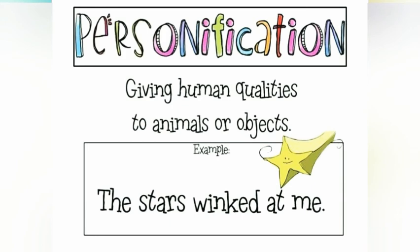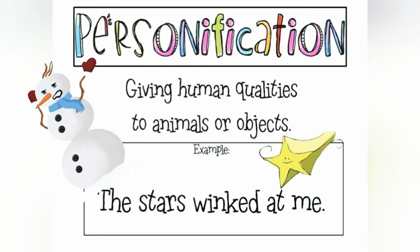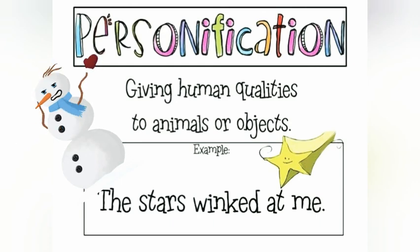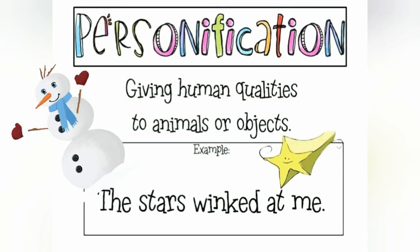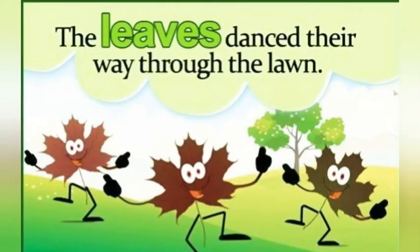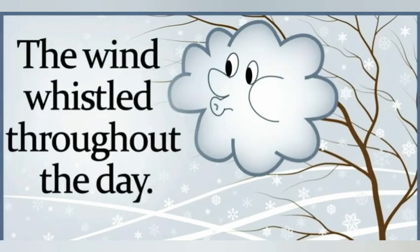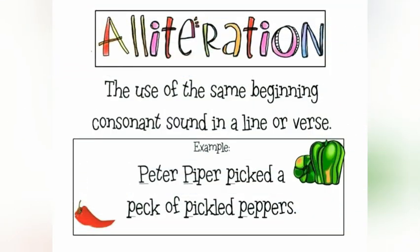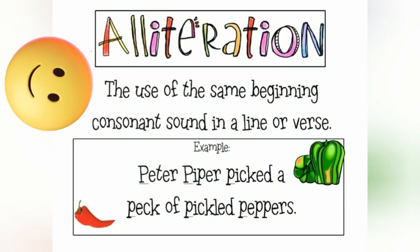The next figure of speech is personification, which means giving human qualities to animals or objects. Related to this is alliteration, which means the use of the same beginning consonant sound in a line or verse.